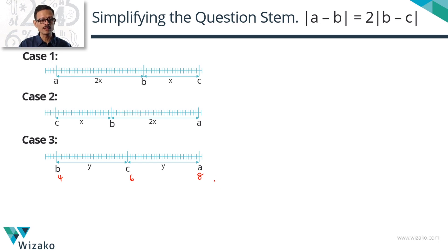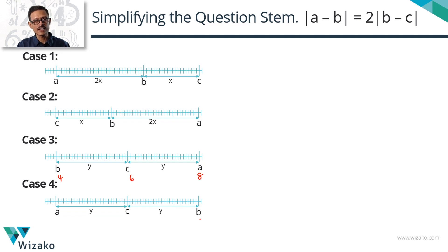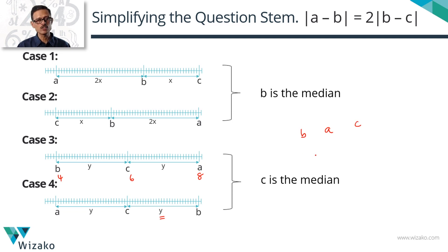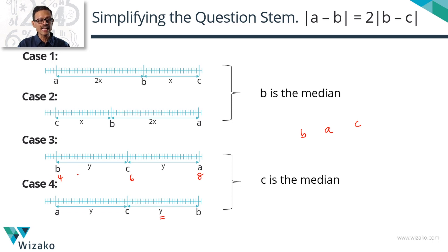Case 4 is simple — swap the places of A and B from case 3. A is to the left of C, B is to the right. The gap between B and C is y, and the gap between A and B is 2y. In cases 1 and 2, B is the median. In cases 3 and 4, C is the median. Note: A cannot be the median — reason that out before moving on.